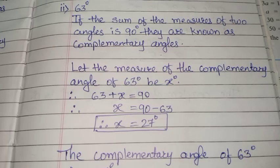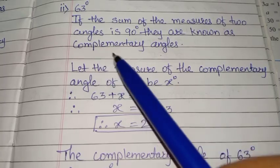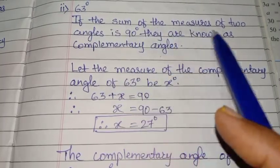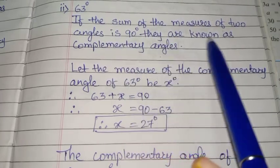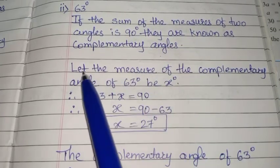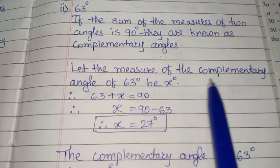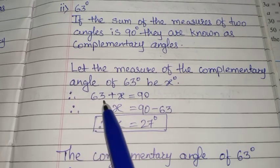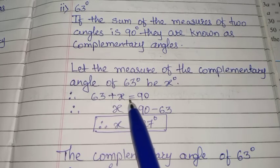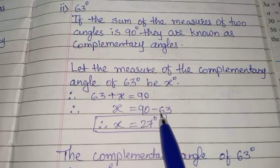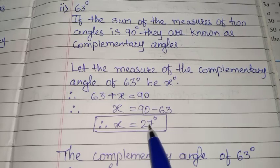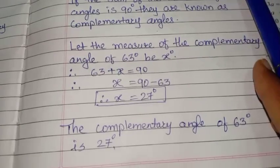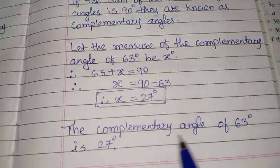Next is 63 degrees. First, write the definition: if the sum of the measures of two angles is 90 degrees, they are known as complementary angles. Let the measure of the complementary angle of 63 degrees be x degrees. Therefore, 63 + x = 90. Therefore, x = 90 − 63, that is 27 degrees. Therefore, the complementary angle of 63 degrees is 27 degrees.